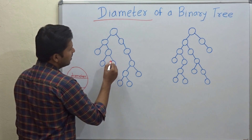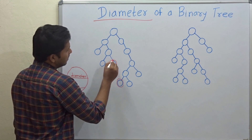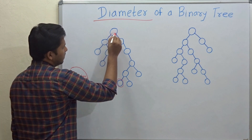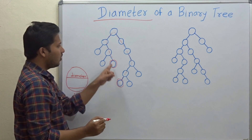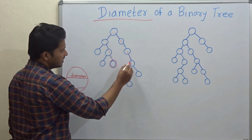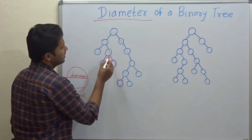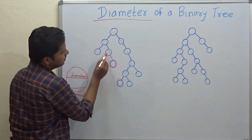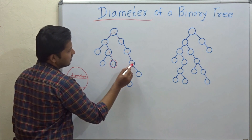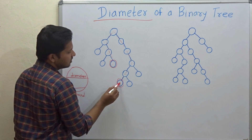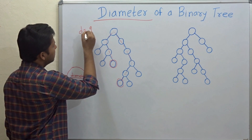For this example, from this node to this node, this path is the diameter of the binary tree. What is the length of the diameter? Counting the nodes: 1, 2, 3, 4, 5, 6, 7, 8, 9 — so 9 is the length of that diameter for this binary tree.